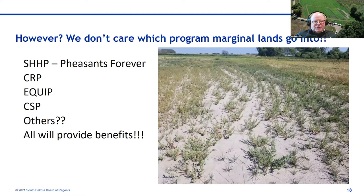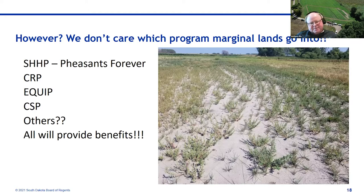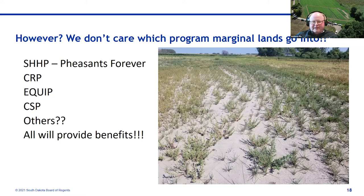We don't care what program the acres go into. Other options include SHHP, CRP, EQUIP enhancements, and CSP, among others. They all provide benefits. Here's a picture of some salty marginal land that's just been seeded — you can see the rows of perennials growing, and the kochia coming along. It progresses that way and eventually develops quite well.